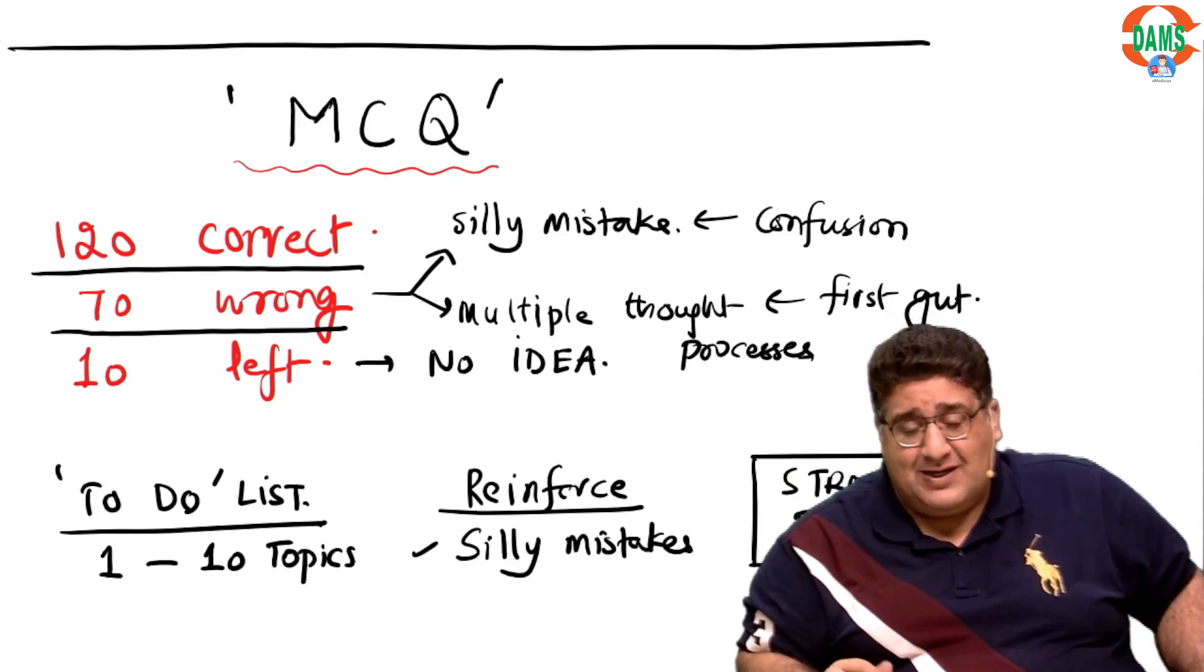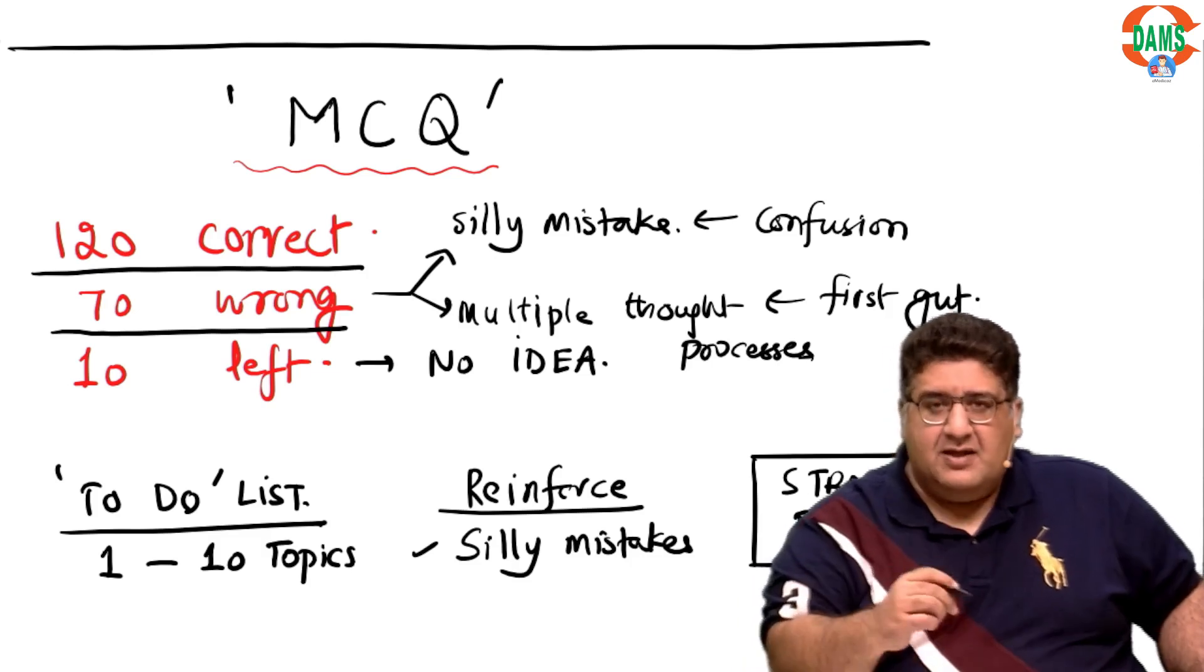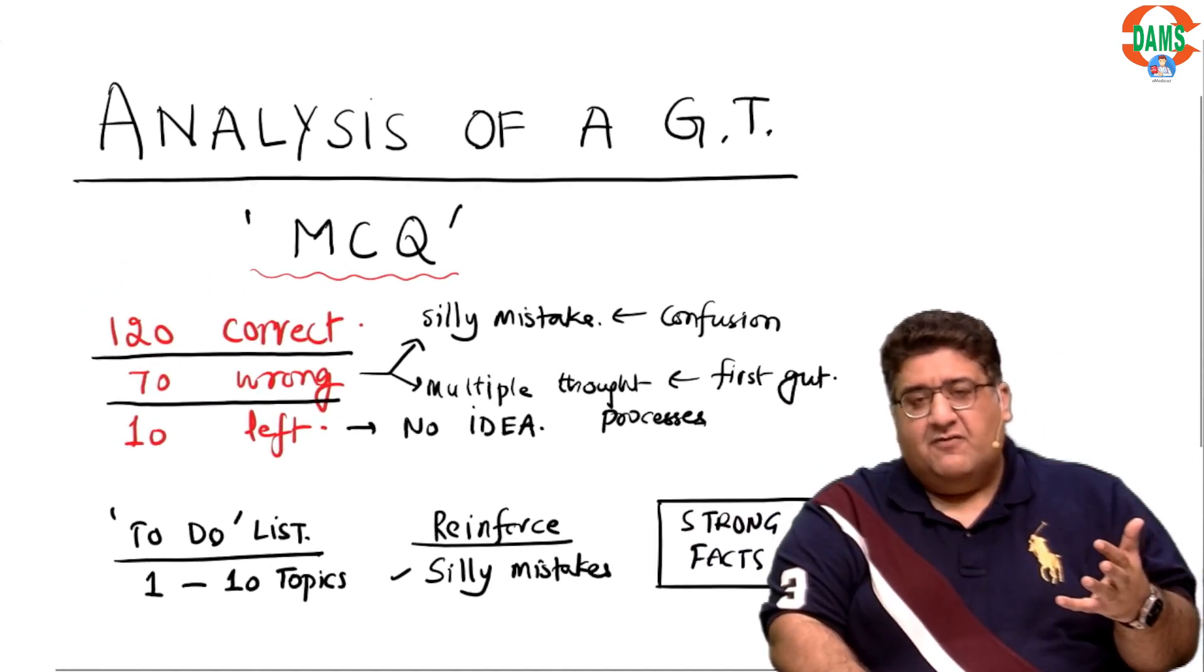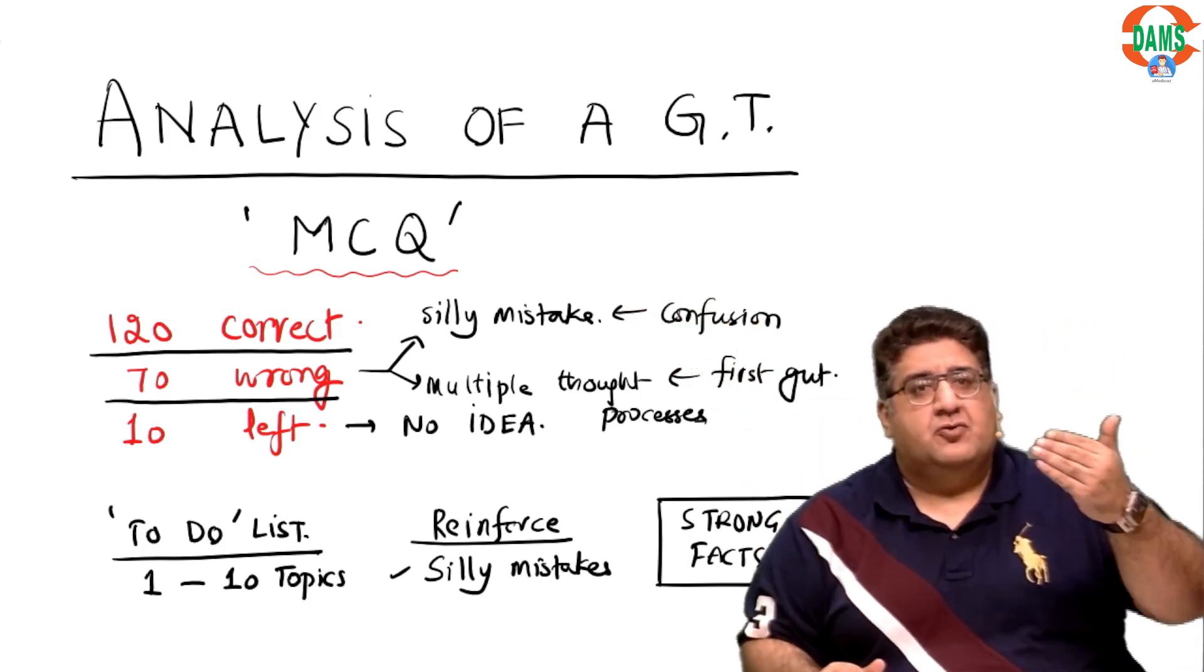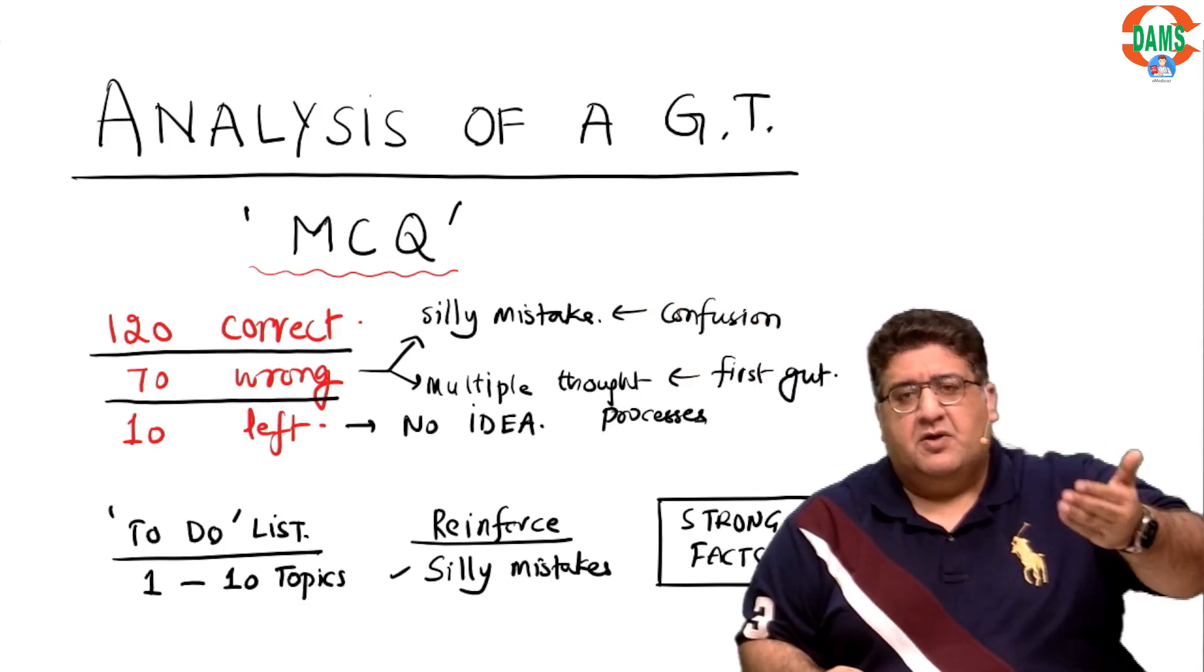And they have a slight smirk on their face and they talk to themselves that I know it is between B and C. The examiner wants you to confuse me, but don't worry, it is B. And they mark B and they move on and they secure a rank. So what is the bottom line that we have learned? Solving an MCQ is an art which is to be learned, which is to be acquired, which is not a part of the nature. It is a part of the nurture. One can do it for sure.